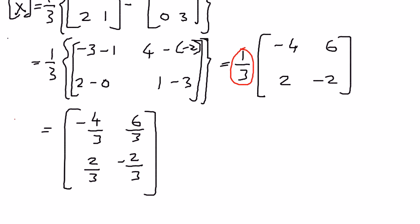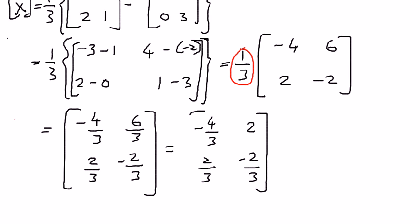We can simplify further: negative 4 over 3 stays as a fraction, 6 over 3 simplifies to 2, while 2 over 3 and negative 2 over 3 remain as fractions. This is how we arrive at the value of X. In this case X is a matrix with elements within it — unlike in a regular algebraic equation where X is just a number. This is how matrix addition and scalar multiplication are used to solve for an unknown matrix. In the next presentation, we shall look at more properties and apply them to simple examples.